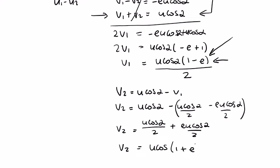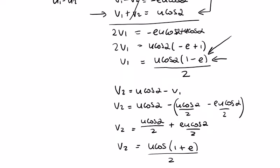Which gives u cos alpha over 2 plus e u cos alpha over 2. So that's my v1 and v2.